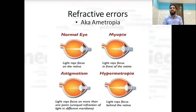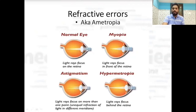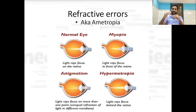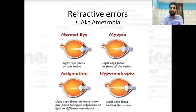Refractive errors are known as ametropia. In a normal eye, light falls on the retina. In myopia it falls in front of the retina; in hypermetropia it falls behind the retina. Astigmatism has two different foci — the ray falls at two different points rather than one.